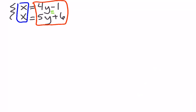So I can set 4y minus 1 equal to 5y plus 6 and solve that equation. So for me, I'm going to move the 4y. So I need to subtract 4y from both sides.